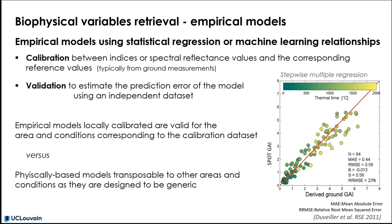the validation aims to estimate the prediction error of the model using a fully independent dataset. The graph on the right shows the matching between the GAI ground measurement and their corresponding values estimated from the satellite observation using a stepwise multivariate regression.